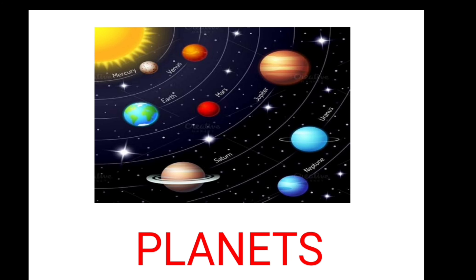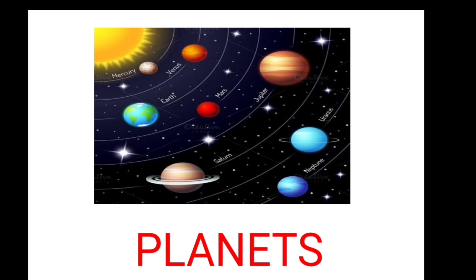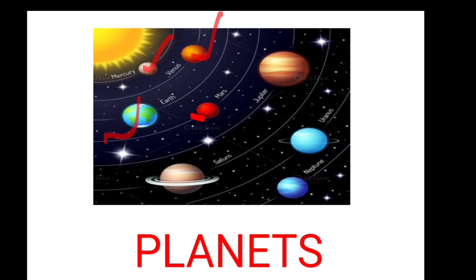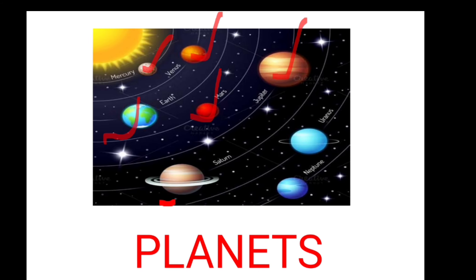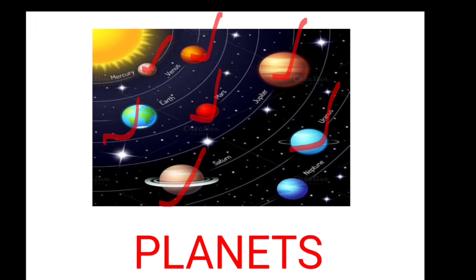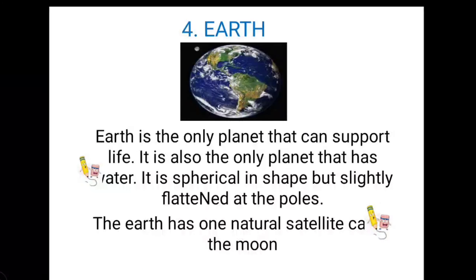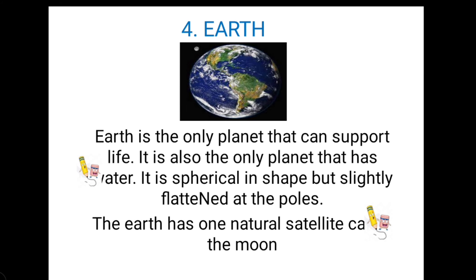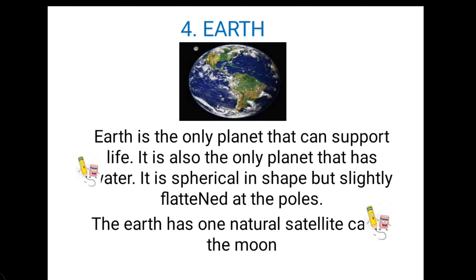You can see here in this picture the planets. First is Mercury, then Venus, then Earth, then Mars, then Jupiter, then Saturn, Uranus, and the last is Neptune.